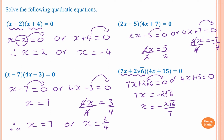For the second equation, moving 15 gives 4x equals negative 15. Dividing by four: four goes into 15 three times with remainder three, so x equals negative three and three quarters. Therefore x equals negative 2 root 6 over 7, or x equals negative three and three quarters.